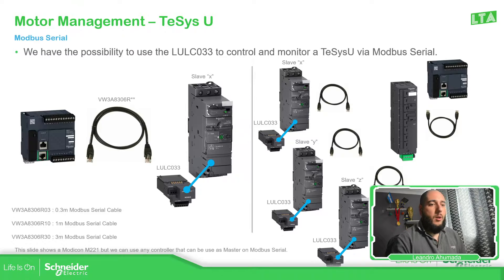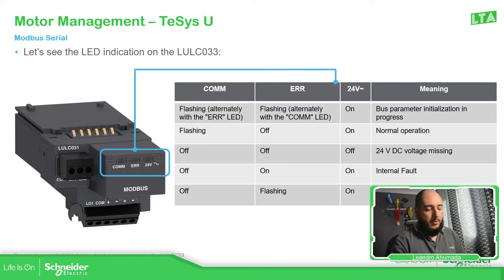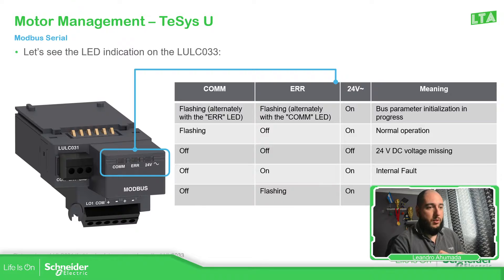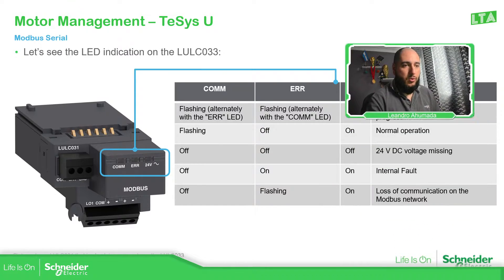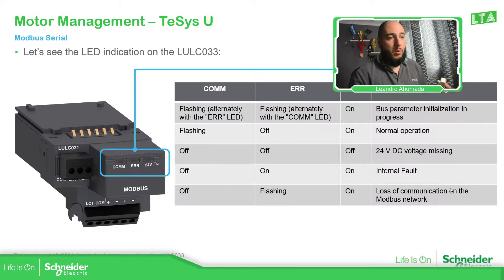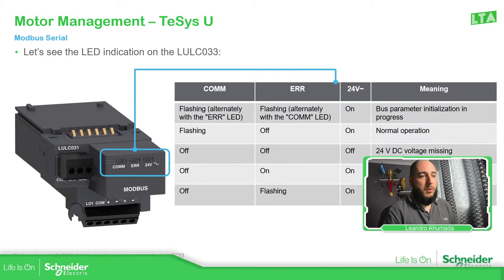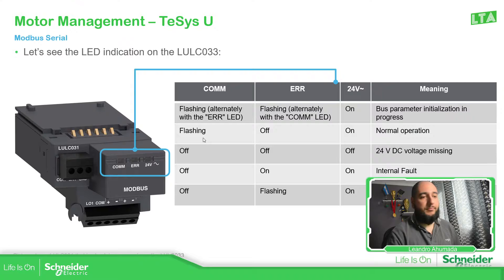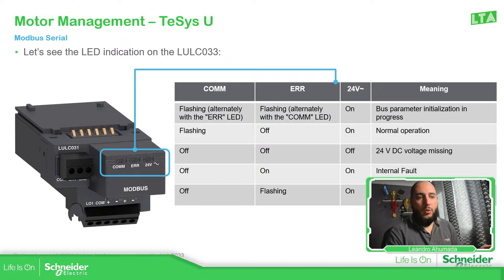Once you have that configuration and you connect the device, you should be able to see on the front that we have three LEDs. These three LEDs give us information about what's going on with the unit. So basically, if you have the middle one — which is for error — flashing and you don't have communication, you know there is a communication loss on the Modbus network. If everything is well, you should have the communication LED flashing and the 24-volt LED on.